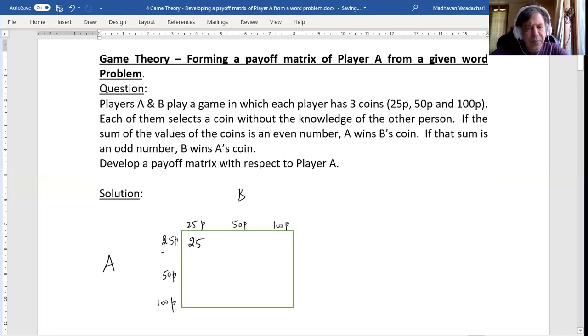Now if you add these two, for example A is showing 25 paise coin, B is showing 50 paise coin. If I add 25 and 50, I get 75. 75 is an odd number, which means B wins A's coin. That means this 25 paise coin of A, B will get it back, means A is going to lose this 25 paise. Remember, here we are going to write about the gains and losses of Player A. That means here it is a loss to A. I will write it as minus 25.